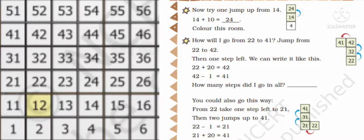Kittu is saying that you could go this way also. There is one more way to go to 41. Let's see how. First, you have to just minus 1 from 22, then you will reach to 21. Then from there you just jump two steps forward, that is 21 plus 10 is 31, 31 plus 10 is 41. You will reach to 41.